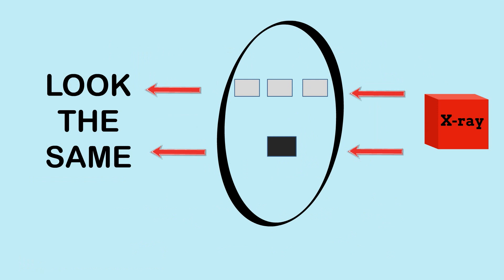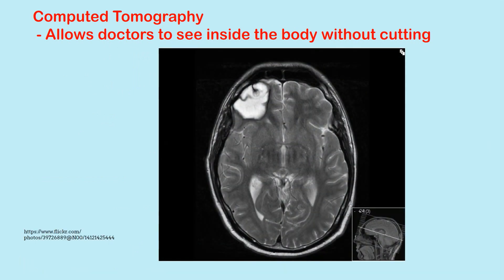So CT scans are fantastic because they allow doctors to see inside the body without cutting. So here's a CT scan of a brain, and this is actually what a doctor would see if he cut across someone's skull and looked to see what's inside. But the benefit of the CT scan is that we don't have to kill the patient in the process. So that's a good thing.